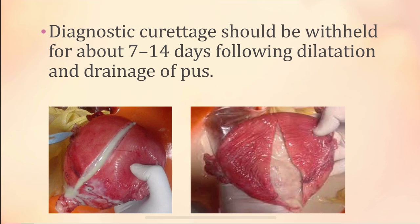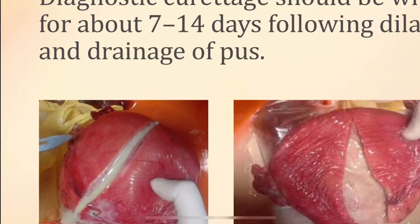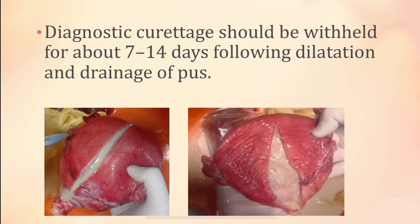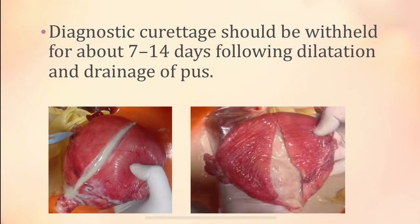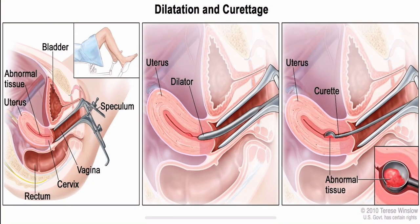Diagnostic curettage should be withheld for about 7–14 days following dilatation and drainage of pus. First, perform the dilatation and then drain the pus. Once the pus is drained, follow with diagnostic curettage. In diagnostic curettage, the cervix is dilated and the curettage is performed so that the abnormal tissues are removed. This helps minimize complications like perforation of the uterus or spreading peritonitis. During this interval period of 7–14 days, antibiotics should be prescribed.